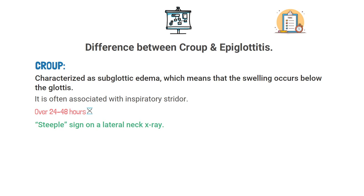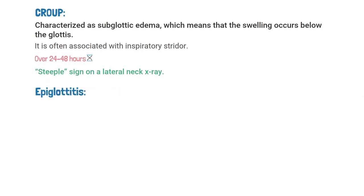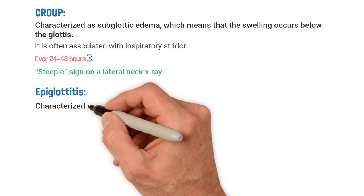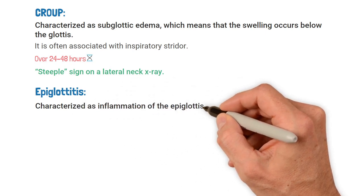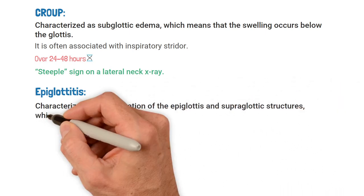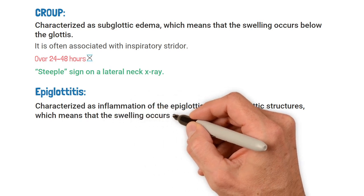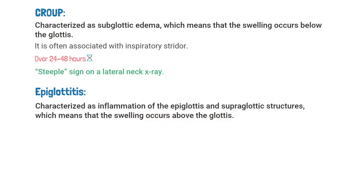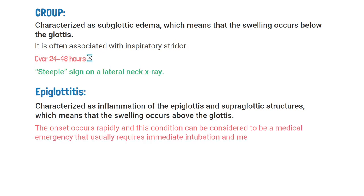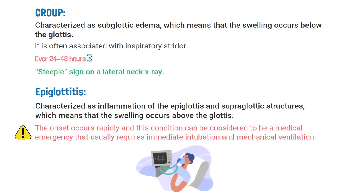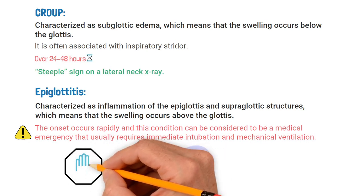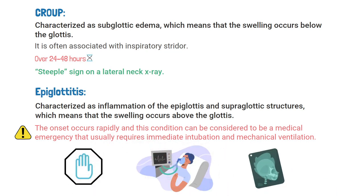Epiglottitis, on the other hand, is characterized as inflammation of the epiglottis and supraglottic structures, meaning the swelling occurs above the glottis. With epiglottitis, the onset occurs rapidly and the condition can be considered a medical emergency that usually requires immediate intubation and mechanical ventilation. When epiglottitis is present, you should look for the thumb sign on the lateral neck x-ray.